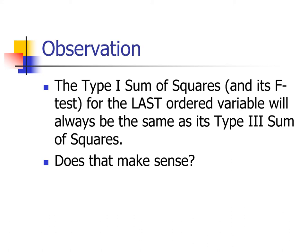The Type 1 sum of squares F test for the last ordered variable will always be the same as its Type 3 sum of squares. If that's not clicking, take those three variables — we did length, chest, age — then try chest, length, age; then age, chest, length. I'm a believer that you're going to learn by doing it yourself. Statistics is a hands-on discipline. You learn by doing much more than by listening. Only you can push yourself over that finish line.